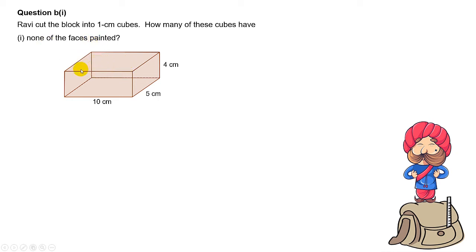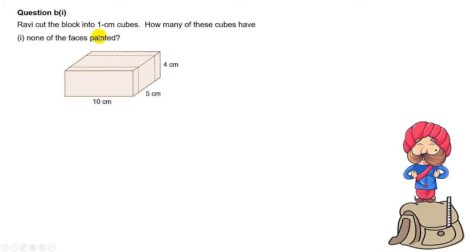The answer is all the cubes that are inside the block, which are not in contact with the outside surface area. Can you visualize this? Because we painted the outside, the inside cubes are not painted. So as long as the cubes are not in contact with the outside surface area, those cubes will have none of the faces painted. To help visualize, we cut away the front and the back first, because the front and the back definitely have faces painted.